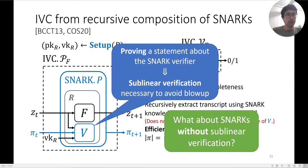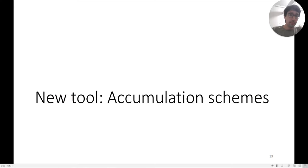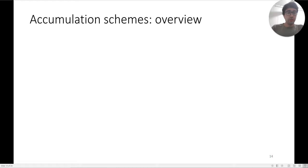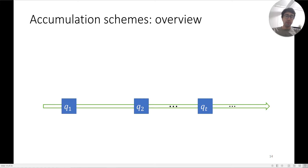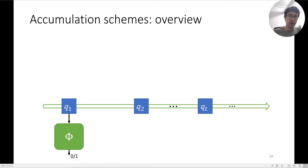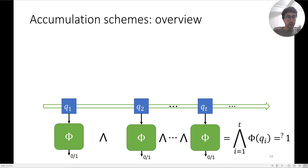To discuss that, we introduce our new cryptographic tool: accumulation schemes. Think about a stream of inputs q1 up to qt. We have a predicate φ which takes an input qi and outputs a zero-one value. The quantity we're interested in is the conjunction of φ applied to all of the qi — we want to know whether the AND of φ(q1) through φ(qt) is one.